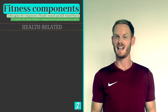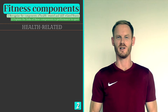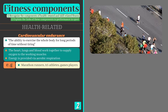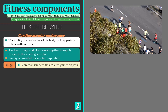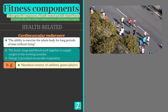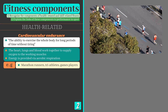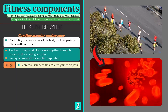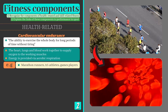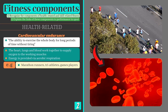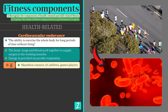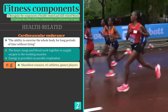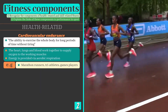We'll begin by defining each of the health related components in order and explaining their relevance to different physical activities. Cardiovascular endurance is otherwise known as stamina and can be defined as the ability to exercise the body for long periods of time without tiring. To achieve this, the heart, lungs and blood must work efficiently to deliver oxygen to the working muscles so that energy can be produced via aerobic respiration.